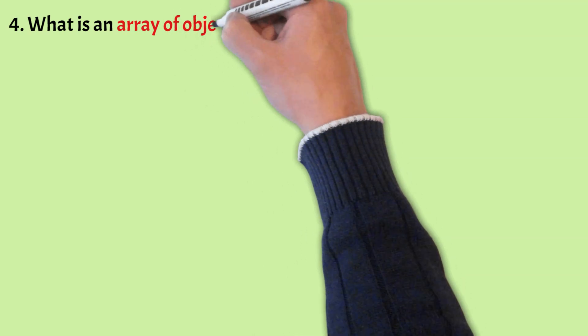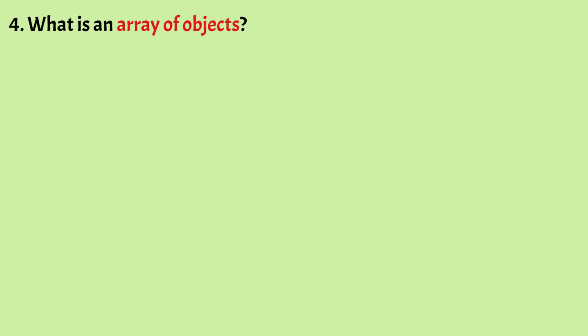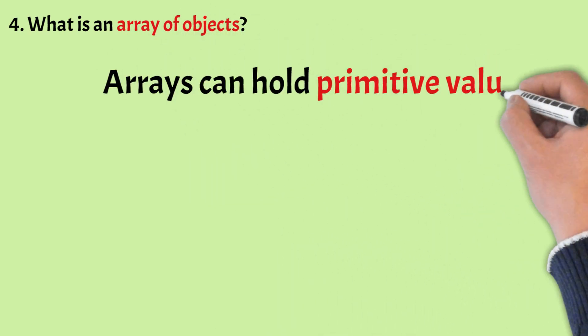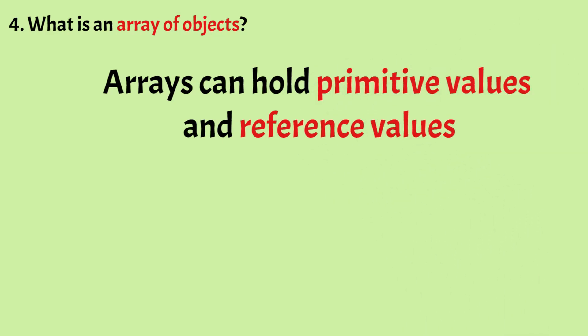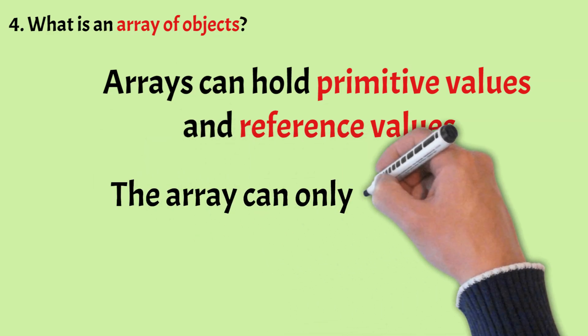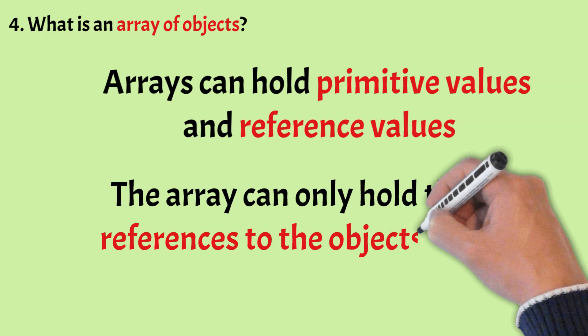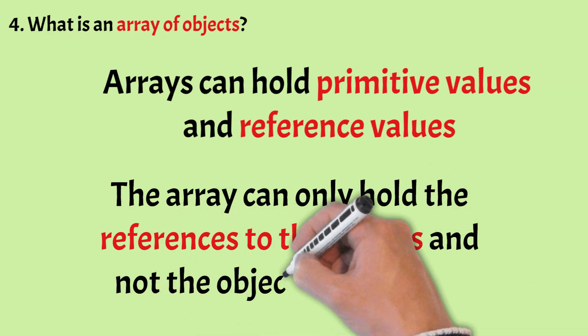What is an array of objects? In Java, arrays can hold primitive values such as int and double, as well as reference values which point to objects. Just as an array holding integer values is called an integer array, an array which holds objects is known as an array of objects. Note that the array can only hold references to the objects, not the objects themselves.